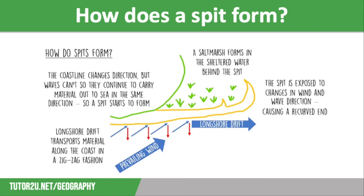At the end of a spit, the pebbles will become smaller and rounded because of attrition taking place. They are also smaller because the longshore drift becomes weaker with distance from the original coastline, so it can only carry small material.